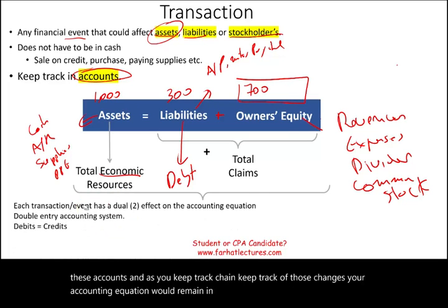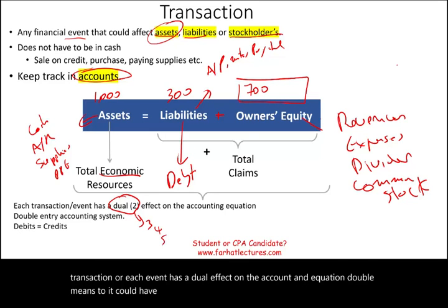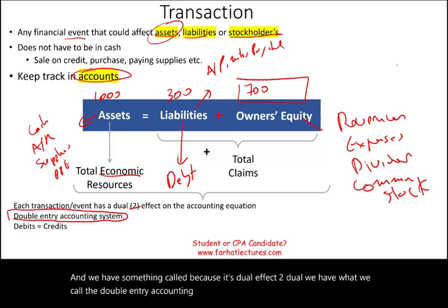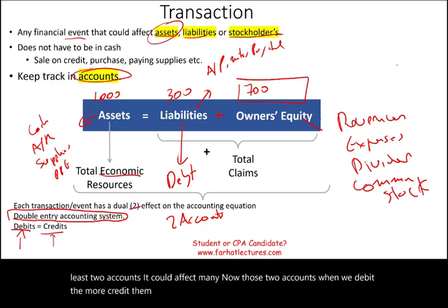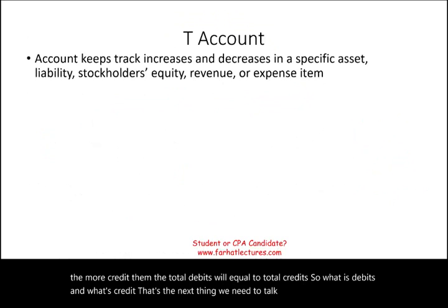Each transaction affects at least two accounts. When we debit or credit those accounts, total debits will equal total credits. T accounts — or accounts — keep track of increases and decreases in a specific asset, liability, stockholders' equity, revenue, expense, or gain and loss. A T account is called a T account because it looks like a capital T, which has two sides: the debit side on the left, and the credit side on the right. That's all debit and credit mean.